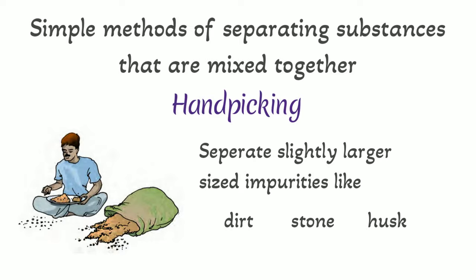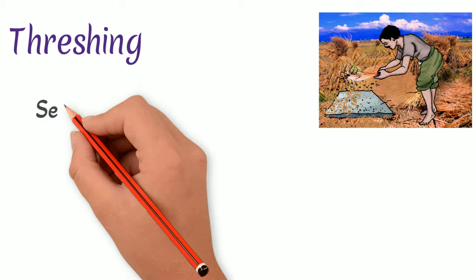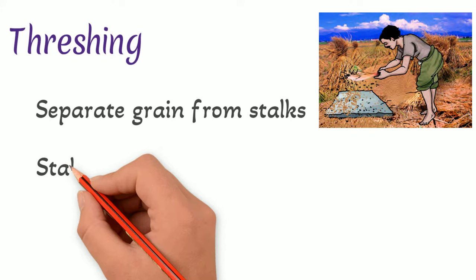Second, threshing. The process that is used to separate grain from stacks is threshing. In this process, the stacks are beaten to free the grain seeds.